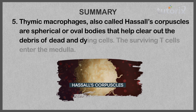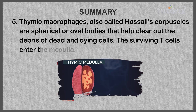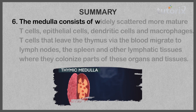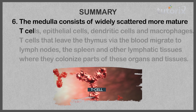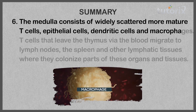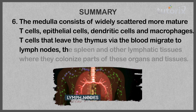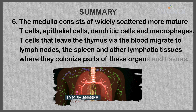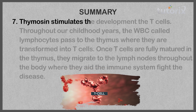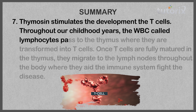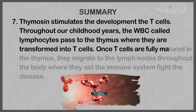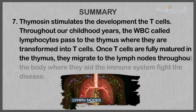Thymic macrophages, also called Hassall's corpuscles, are spherical or oval bodies that help clear out the debris of dead and dying cells. Surviving T cells enter the medulla, which consists of widely scattered, more mature T cells, epithelial cells, dendritic cells, and macrophages. T cells that leave the thymus via the blood migrate to lymph nodes, the spleen, and other lymphatic tissues. Thymosin stimulates T cell development throughout childhood, transforming lymphocytes into T cells, which then migrate to lymph nodes throughout the body.